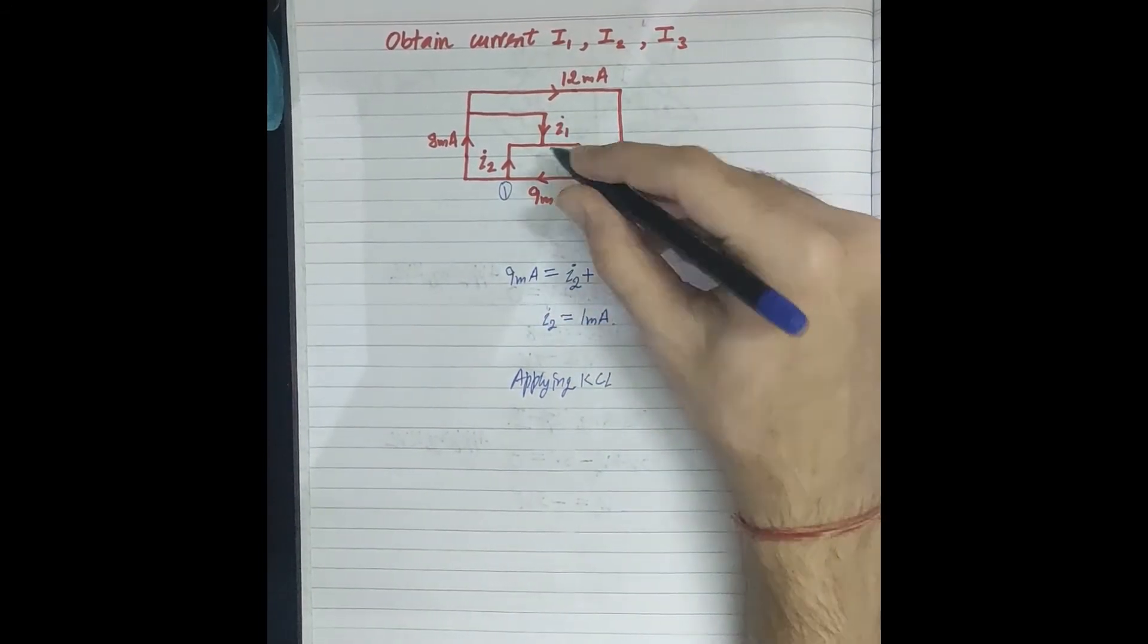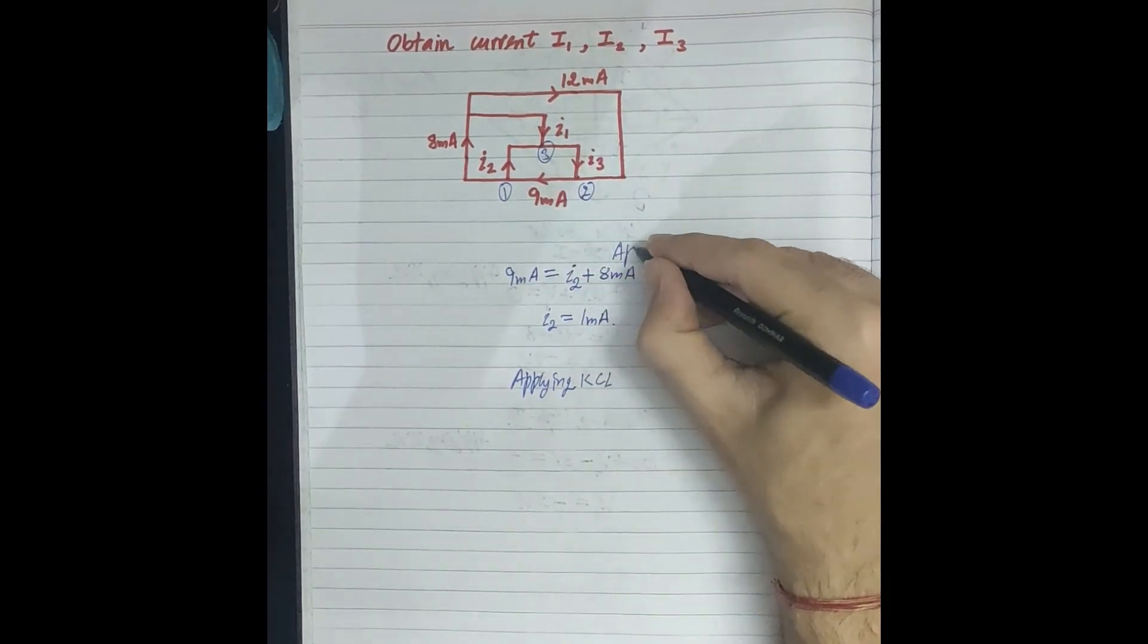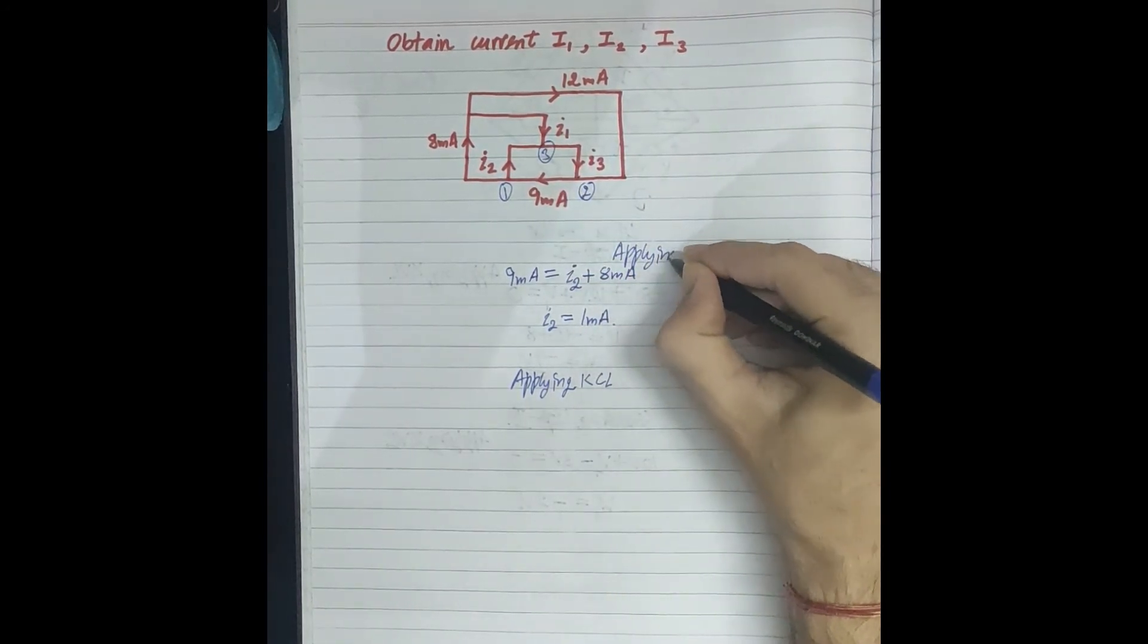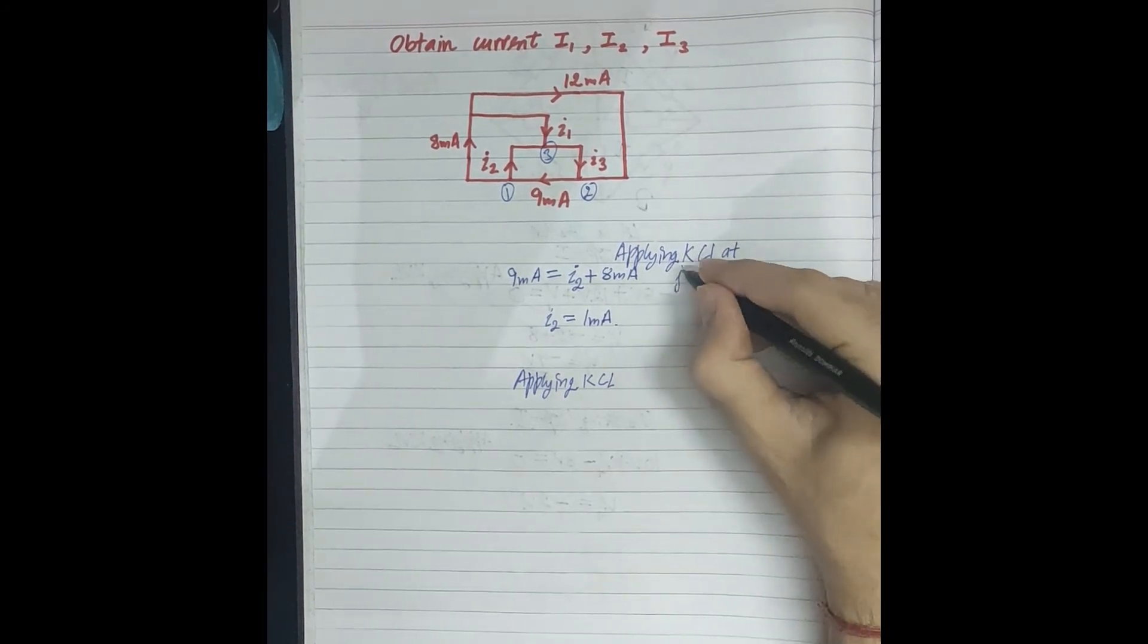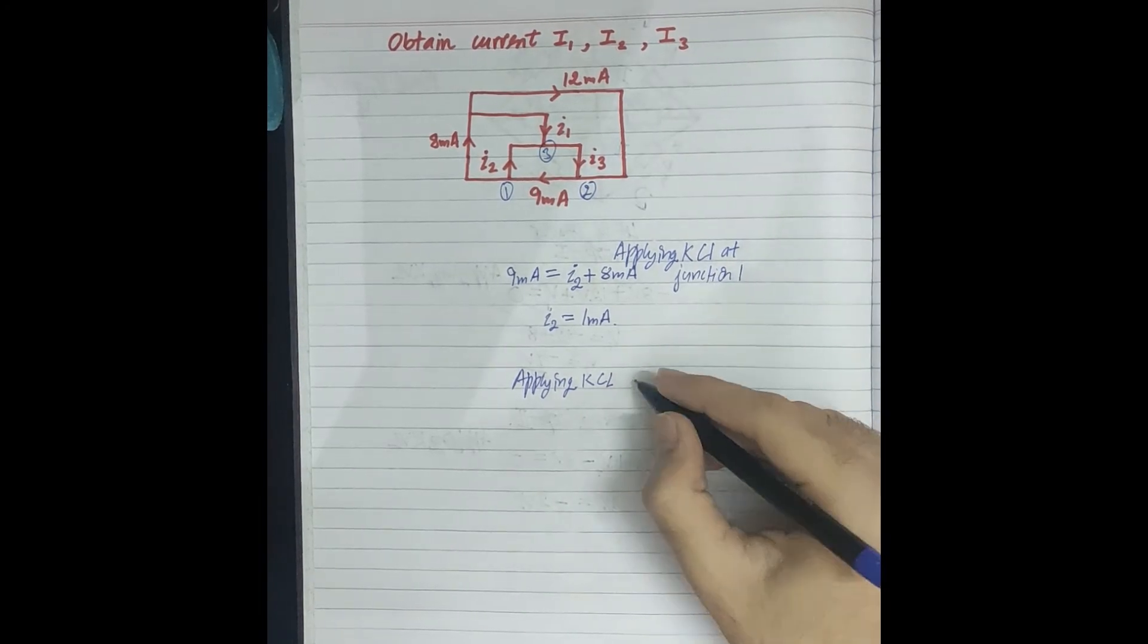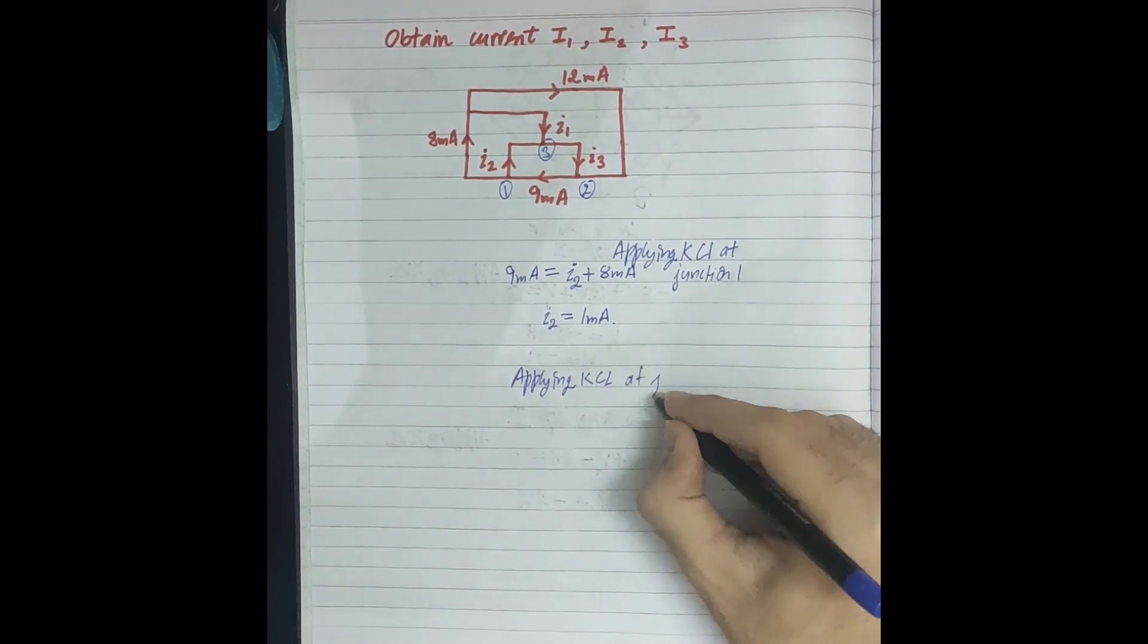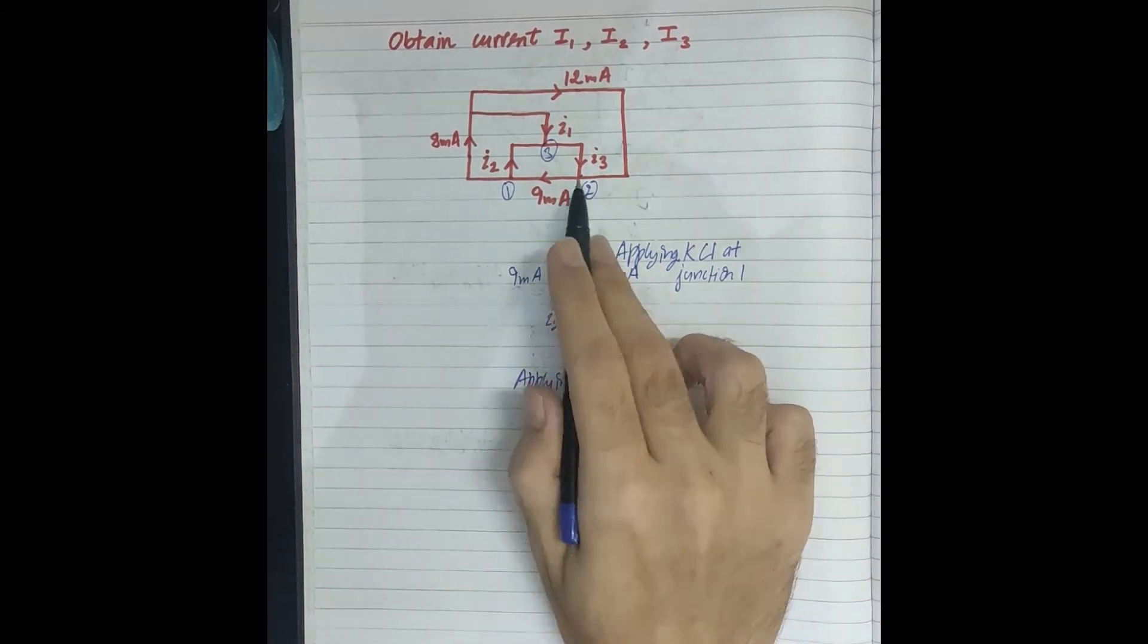Like this is junction 1, this is 2, and this is 3. You can also write here: applying KCL at junction 1 and applying KCL at junction 2.